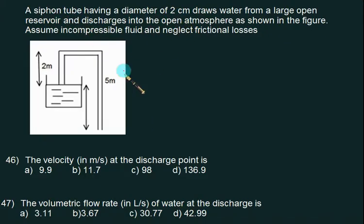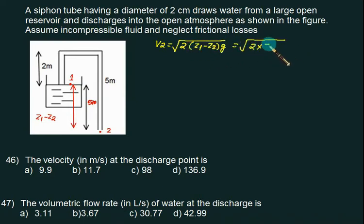A siphon tube having a diameter of 2 centimeters draws water from a large open reservoir and discharges into the open atmosphere as shown in the figure. Assuming incompressible flow, you have to find out two things: velocity and volumetric flow rate. We'll consider here point number one and point number two. This height is 0 minus z2, which equals 5 meters. So we have v2 equals under root of 2 times g times z1 minus z2. We simply substitute the value: under root of 2 into 5, and this answer is 9.9 meters per second. So our choice A is correct.